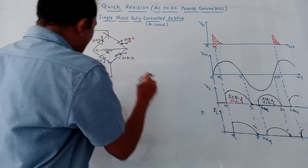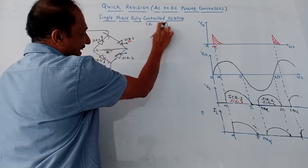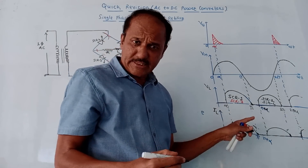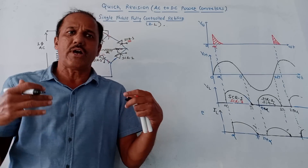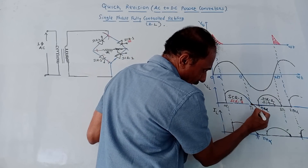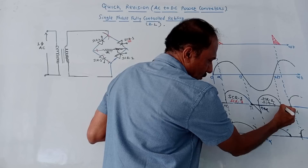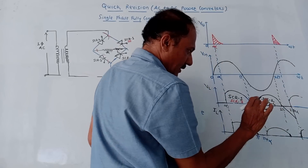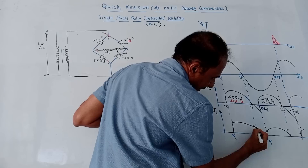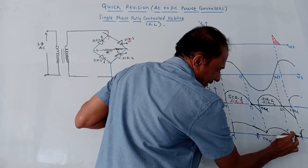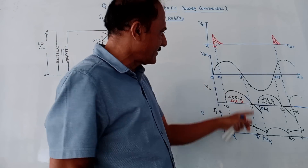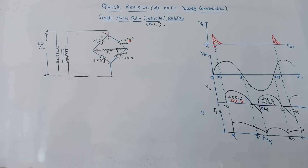For the single phase fully controlled rectifier with RL load, connect one inductor and explain the inductor action: the inductor stores energy and returns it back to the source. During the positive half cycle, conduction continues up to pi plus alpha; during the next cycle, it continues from two pi to two pi plus alpha. The output current does not become zero at pi — it continues till pi plus alpha, then the next cycle starts and it again continues from two pi. These are the corresponding waveforms for the single phase fully controlled rectifier.